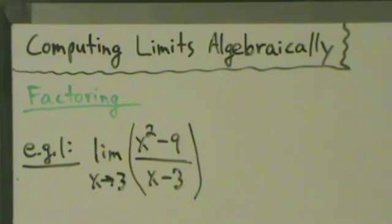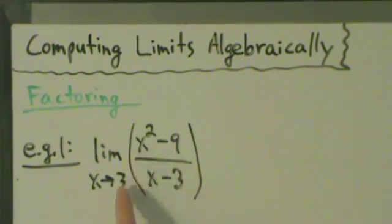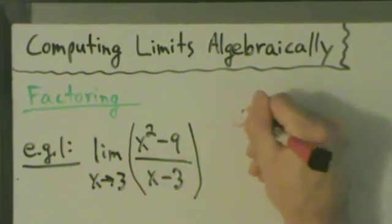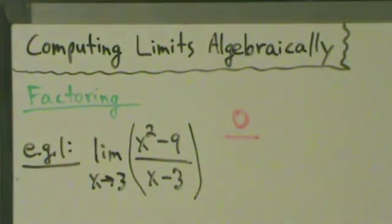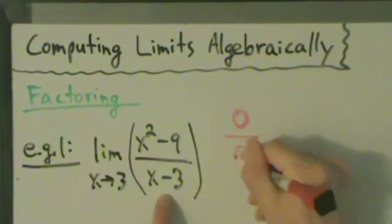So example one: the limit as x approaches 3 of x squared minus 9 divided by x minus 3. Let's try direct substitution and see what happens. On the top, 3 squared is 9 minus 9 is 0, so we have 0 on top. What happens on the bottom? 3 minus 3 is 0.